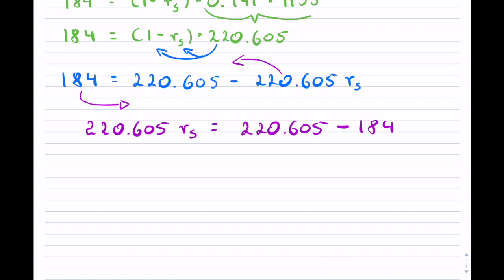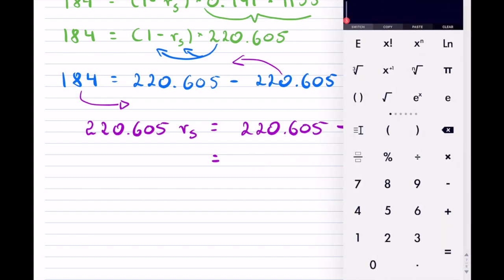So 220.605 RS equals 220.605 minus 184. So now if I do the subtraction here, I'm going to get, whoops, I got ahead of myself. So 220.605 minus 184, so that's 36.605.